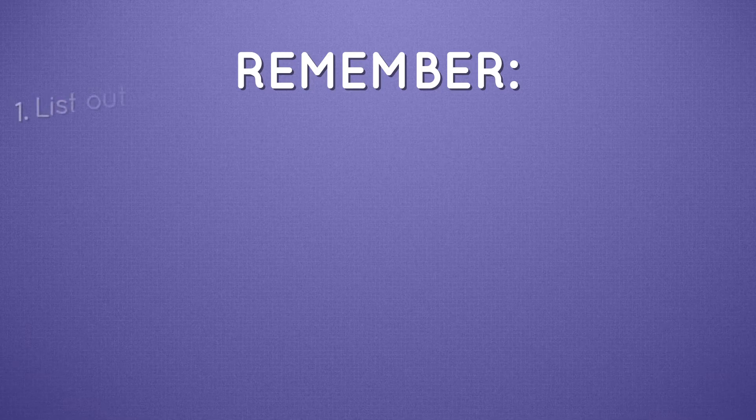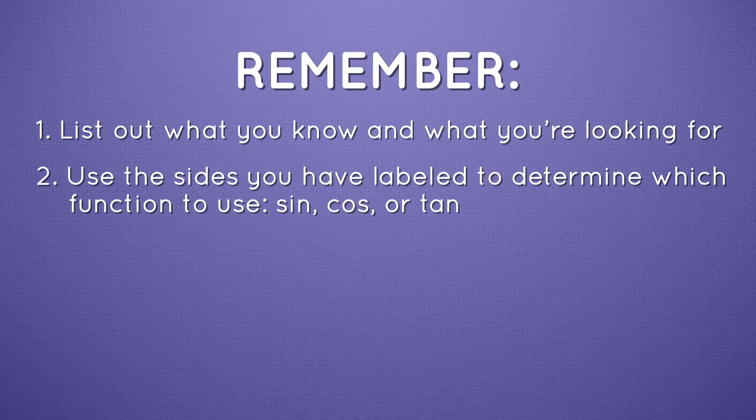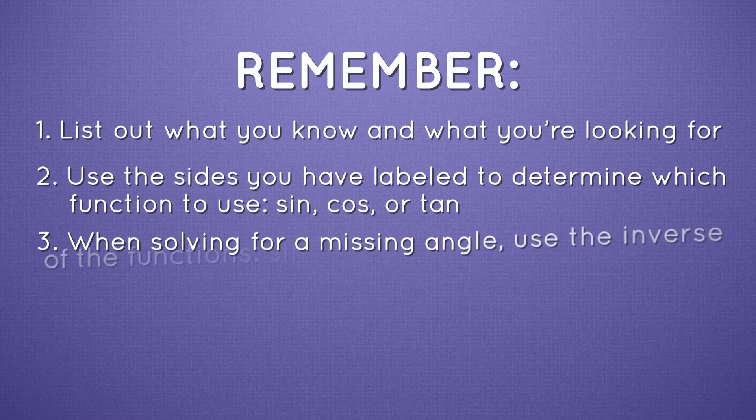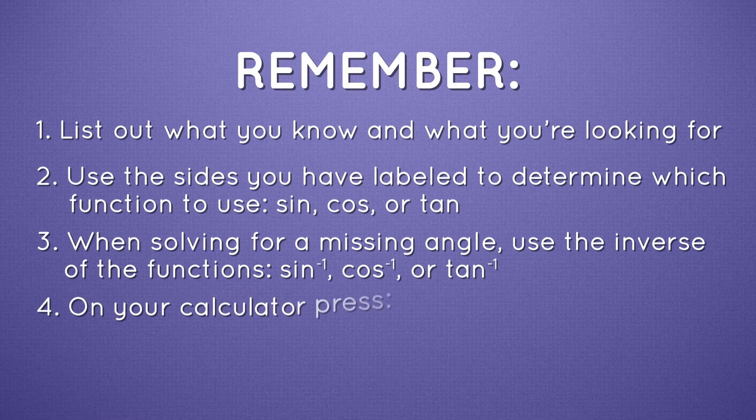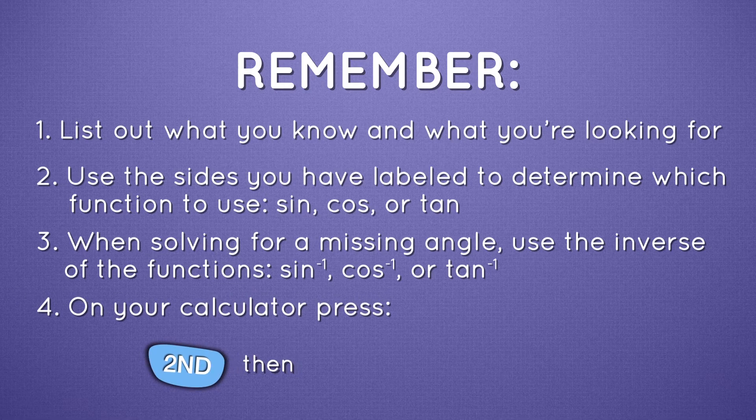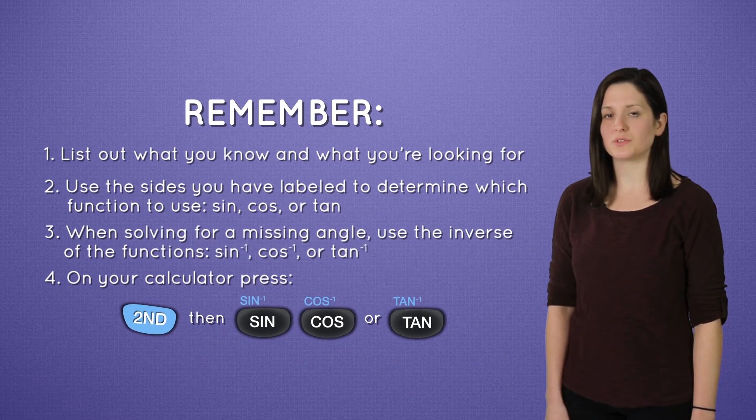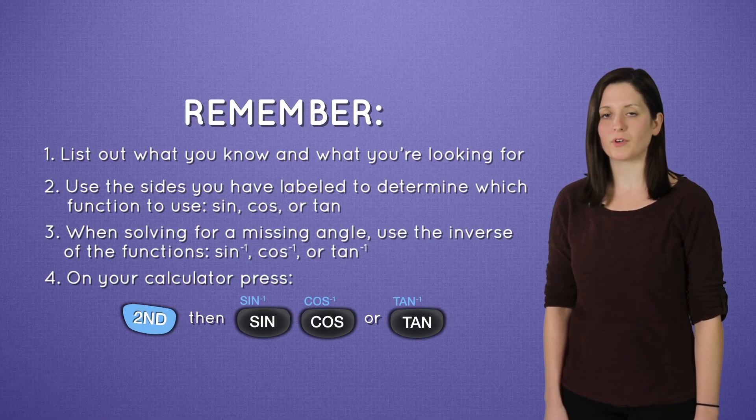Remember, first list out what you know and what you're looking for. Then use the sides you have labeled to determine which function to use. And finally, when solving for a missing angle, you want to use the inverse of the function. On your calculator, press the second button, then press your function. And that's how you use the trigonometric functions to solve for a missing angle.